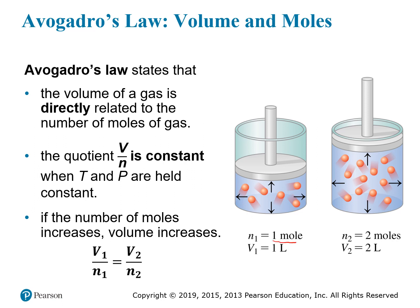So if you have one mole of gas in a one-liter container and you want to add more particles to make it two moles of gas, then you have to increase the volume by the same factor in order to keep the temperature and pressure constant. If you don't allow the volume to increase, then some other variable would have to change. But under the assumption that we're keeping T and P constant, doubling the number of moles will also double the volume.